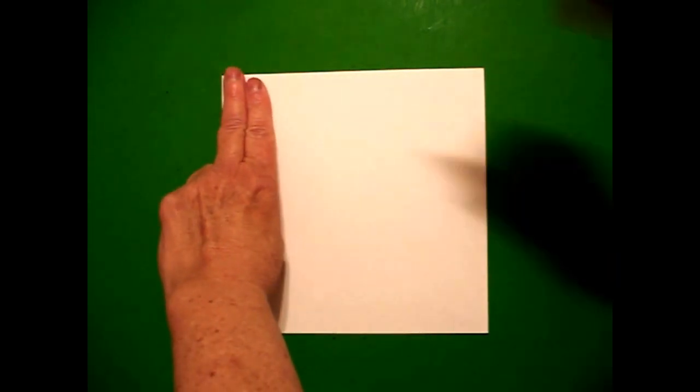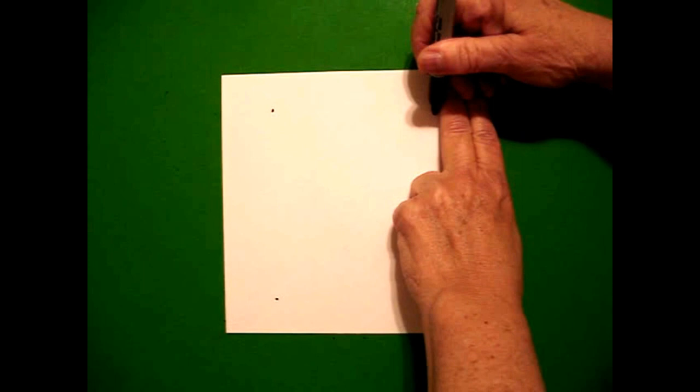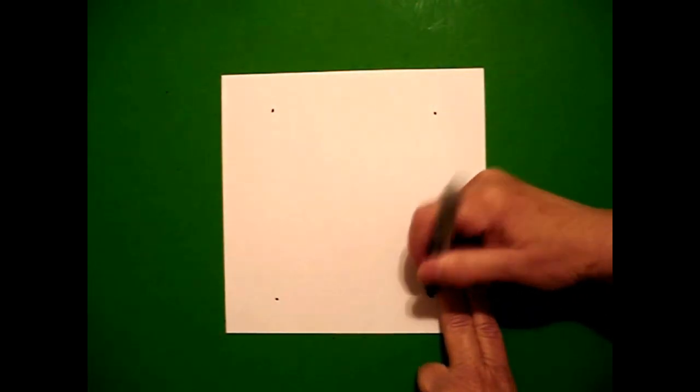I take two fingers at the top, put a dot. Two fingers at the bottom, put a dot. Two fingers on the right, put a dot. Two fingers down below, put a dot.